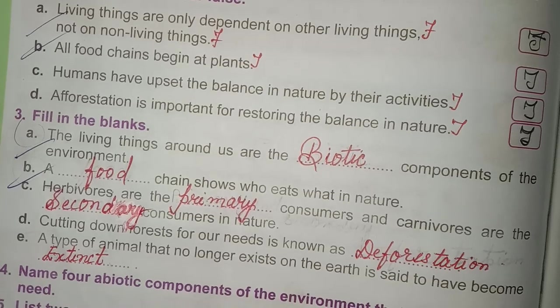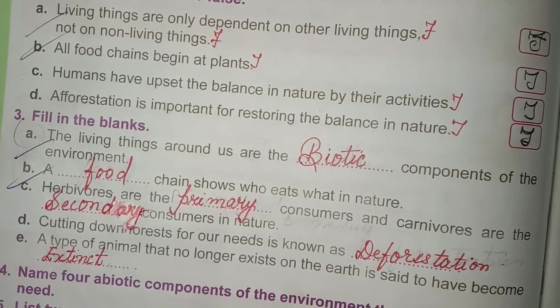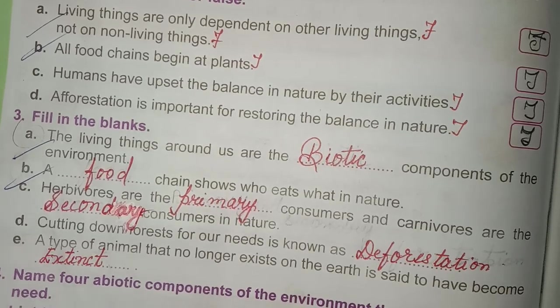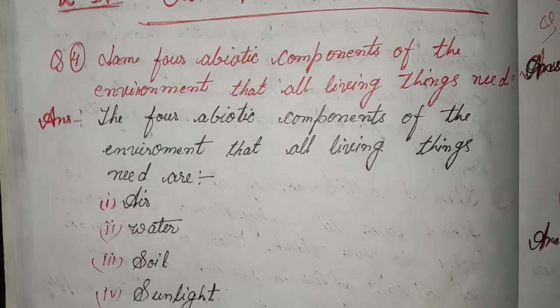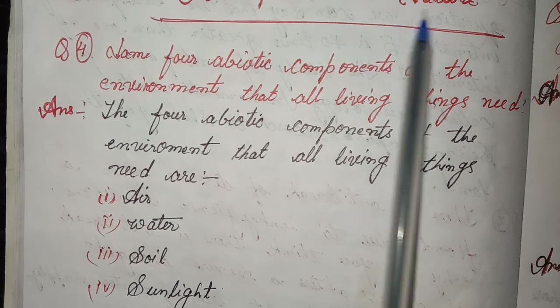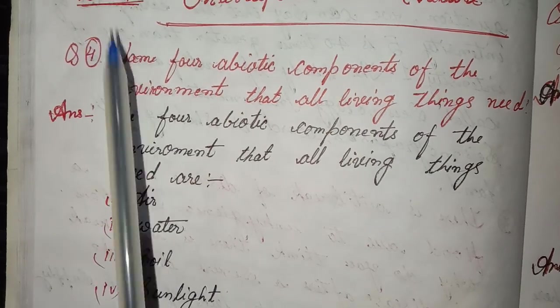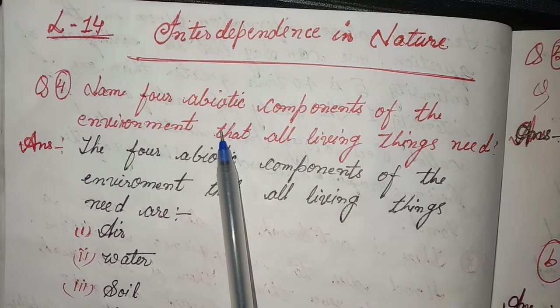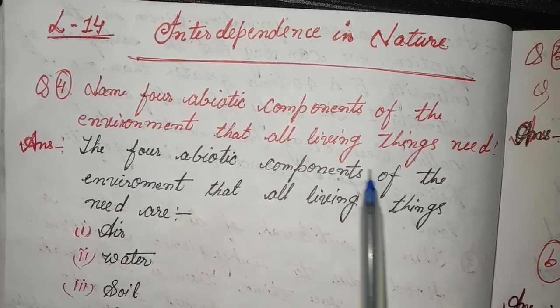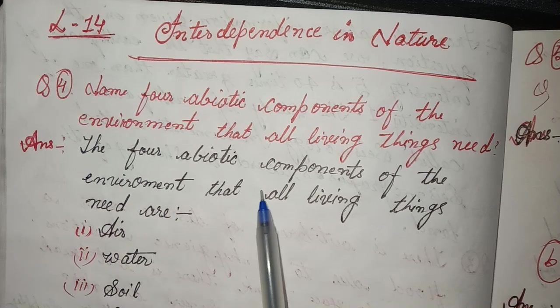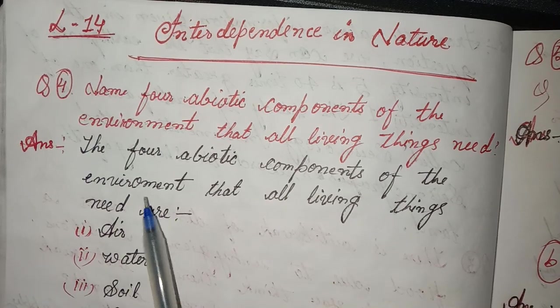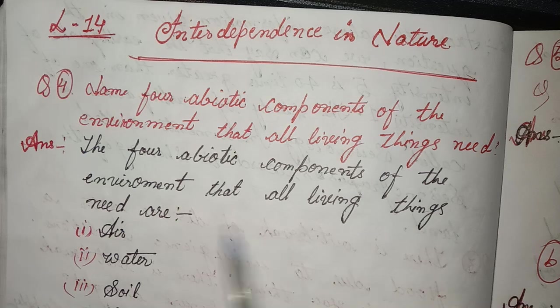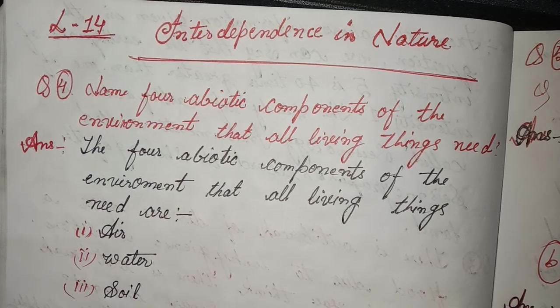I will solve some questions from the book, after that question answers and think-and-answer in the notebook. Question: Name four abiotic components of the environment that all living things need. Answer: The four abiotic components of the environment that all living things need are air, water, soil, and sunlight.